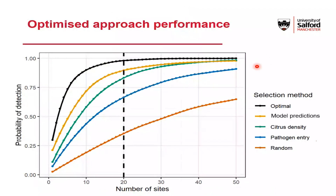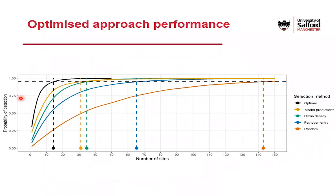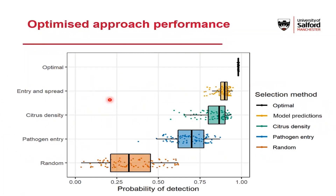Going back to our plot of how number of sites and probability of detection are related, we can now see our optimal approach — this black line — outperforms all of our risk metric approaches. To put it another way, the number of sites we need to visit using our optimised method is much lower than under the other methods to achieve a given probability of detection. When we run these methods multiple times using the same model outputs, we also see a lot less variation in the performance of the optimal approach, in contrast to the rank-based methods where each time you're just taking one possible realisation.